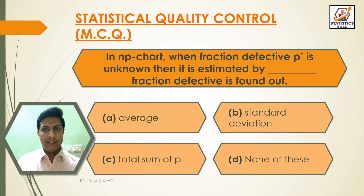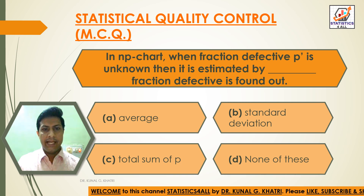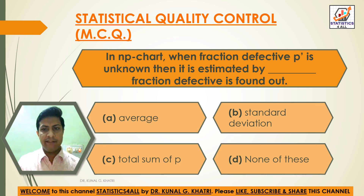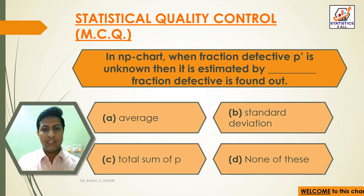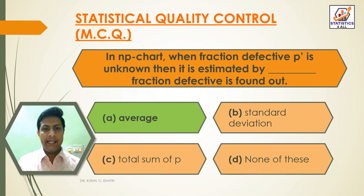Next question: in NP chart, when fraction defective P' is unknown, then it is estimated by which dash fraction defective is found out? Option A: average, Option B: standard deviation, Option C: total sum of P', Option D: none of these. Answer: Option A — average. In NP chart, when fraction defective P' is unknown, then it is estimated by average fraction defective.